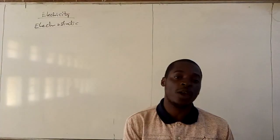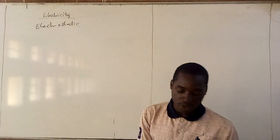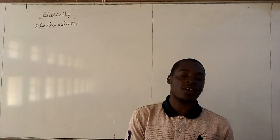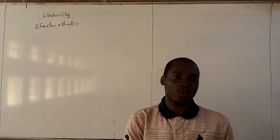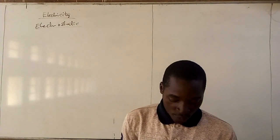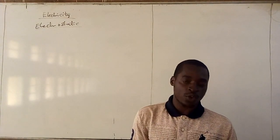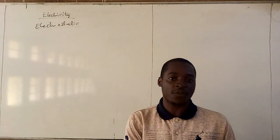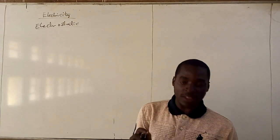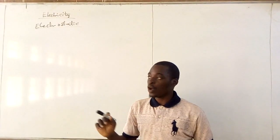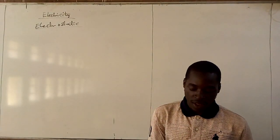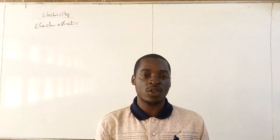If an ebonite rod is rubbed with foam, it will not create electricity, but it will transfer electric charge from the foam to the ebonite. The two of them will transfer electric charges from one to another. For example, a negative charge will transfer from the foam to the rod, and this leaves the foam with an equal amount of positive charge, because both the foam and the rod were originally neutral.